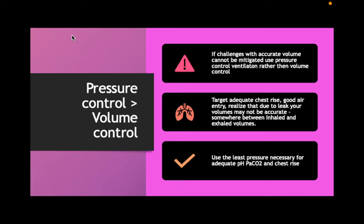When you're on pressure control, you want to look at those volumes and see what they are. But if you have a leak — and a big way to tell is a large difference between your inhaled and exhaled volumes — those numbers don't mean anything. Your inhaled volume might be 20 and your exhaled volume might be 5; in reality you're somewhere in the middle. Do you have good chest rise? When you listen to the lungs, are you hearing air moving in and out? You can also look at your CO2 if you're able, but that's not always the case. Often we want to use pressure control for that reason.